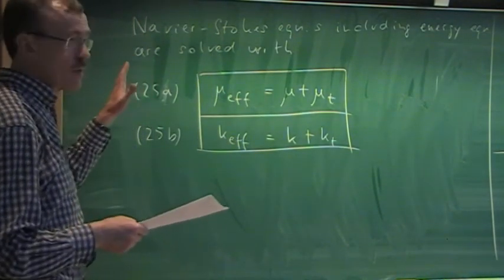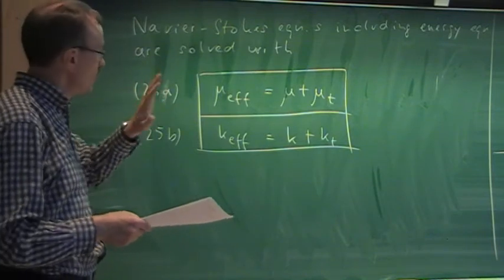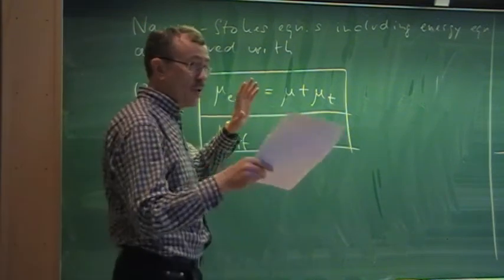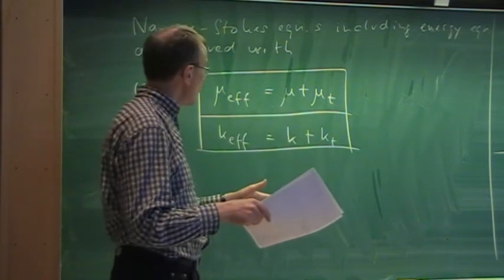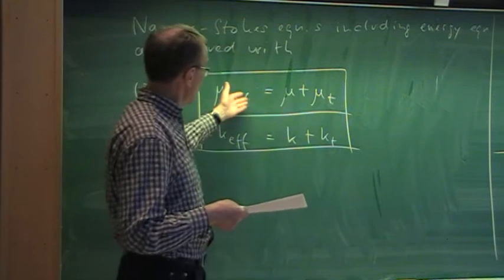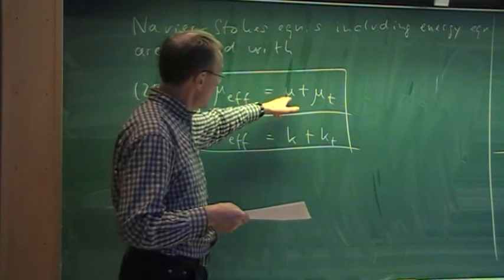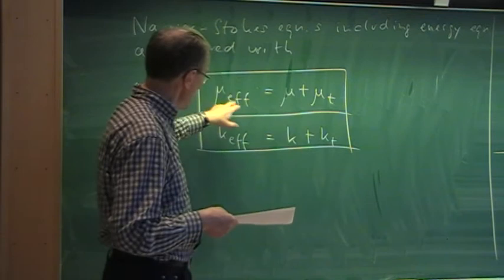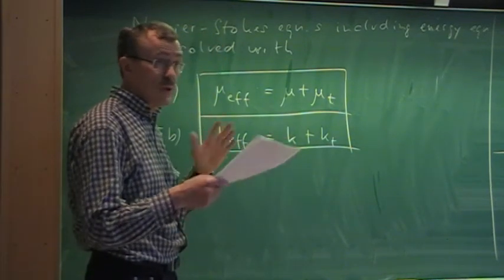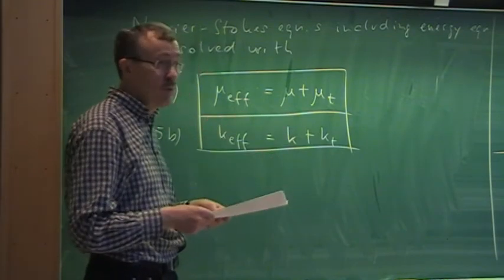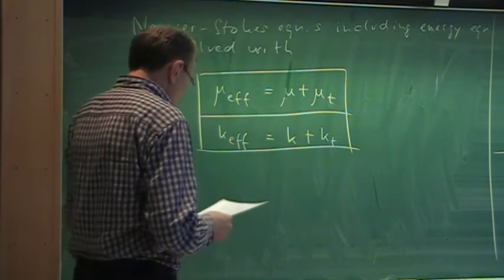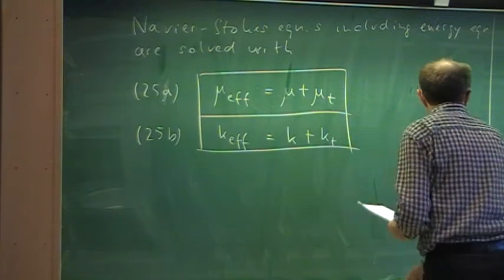What we need is a solver for the general Navier-Stokes equations including the energy equation, plus a subroutine to compute the eddy viscosity. We simply replace the viscosity coefficient by the effective viscosity and the thermal conductivity by the effective thermal conductivity — and that is all. Then we compute everything as we would do for laminar flow. This makes things extremely simple.